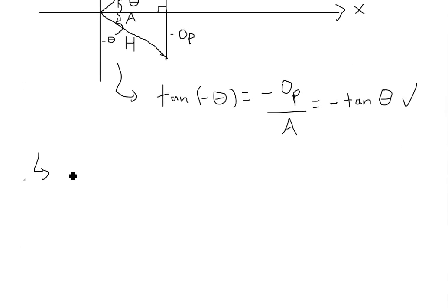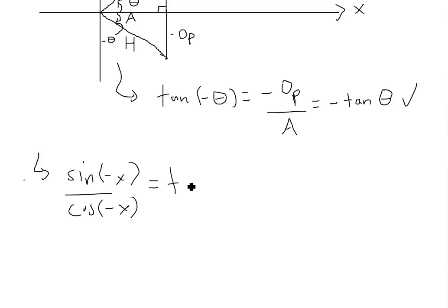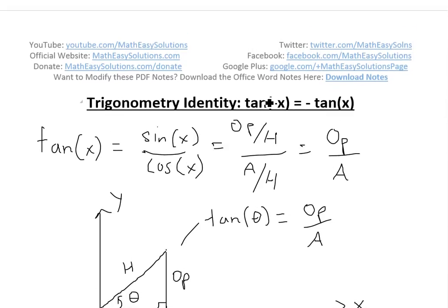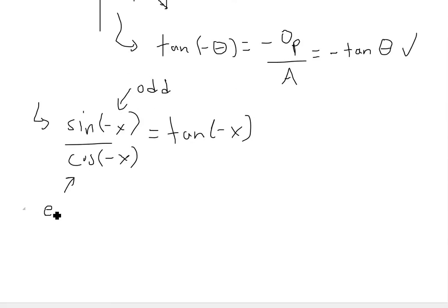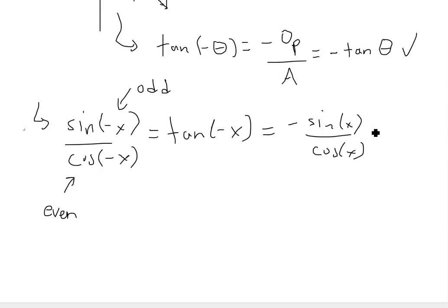Another way to prove it: write tan of negative x as sine of negative x divided by cosine of negative x. As shown in my earlier video, sine is an odd function, so sine of negative x equals negative sine of x. Cosine is an even function, so cosine of negative x equals cosine of x. Therefore this becomes negative sine of x over cosine of x, which equals negative tan of x.